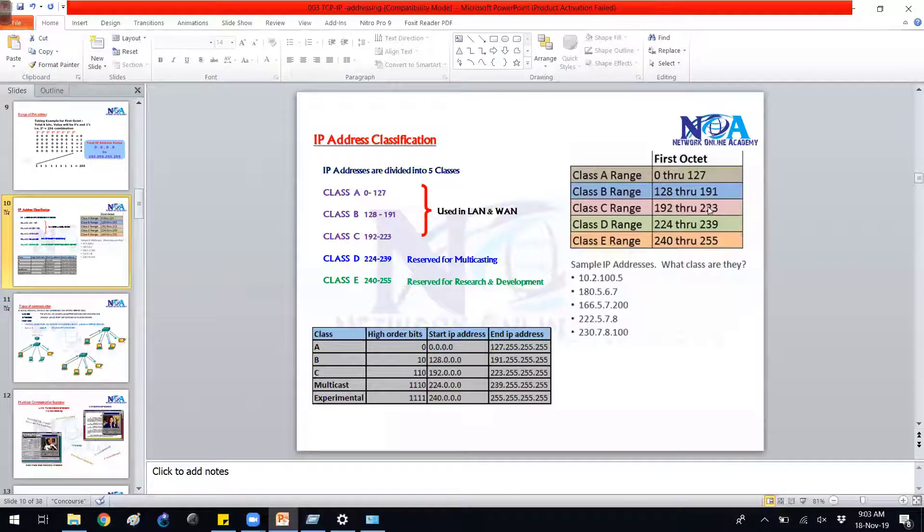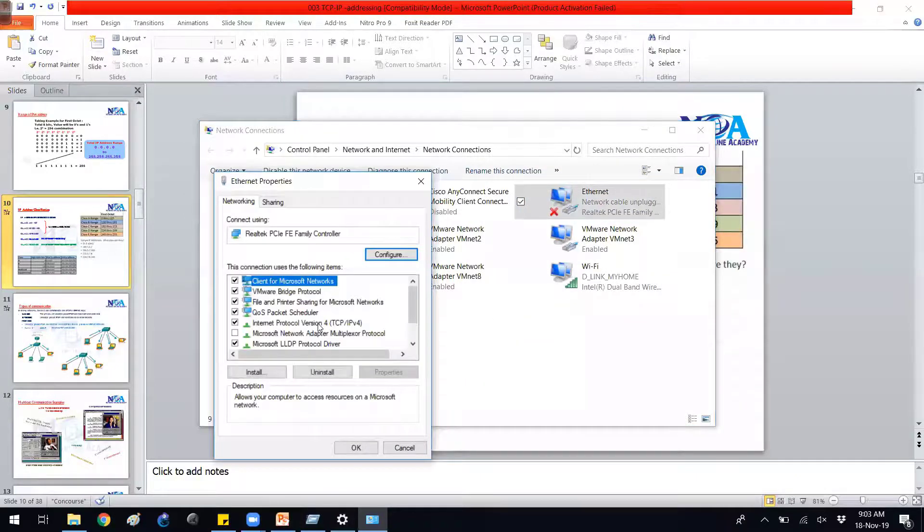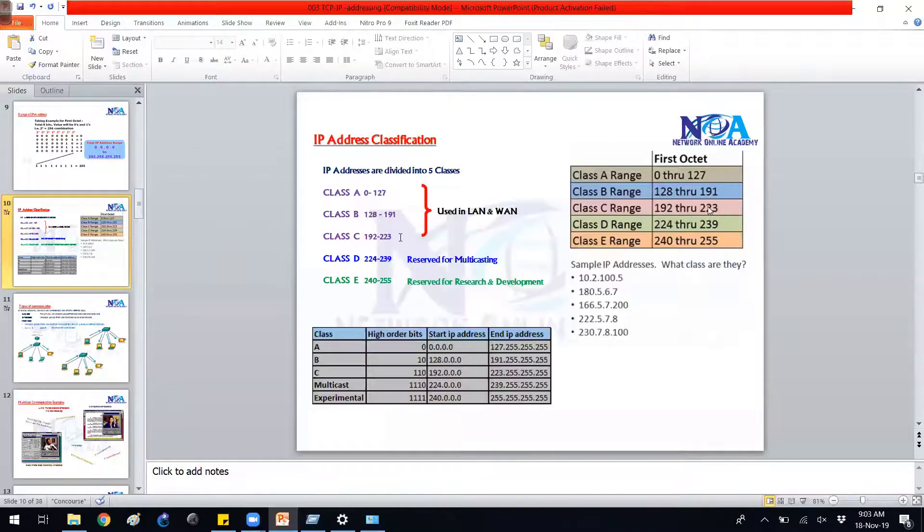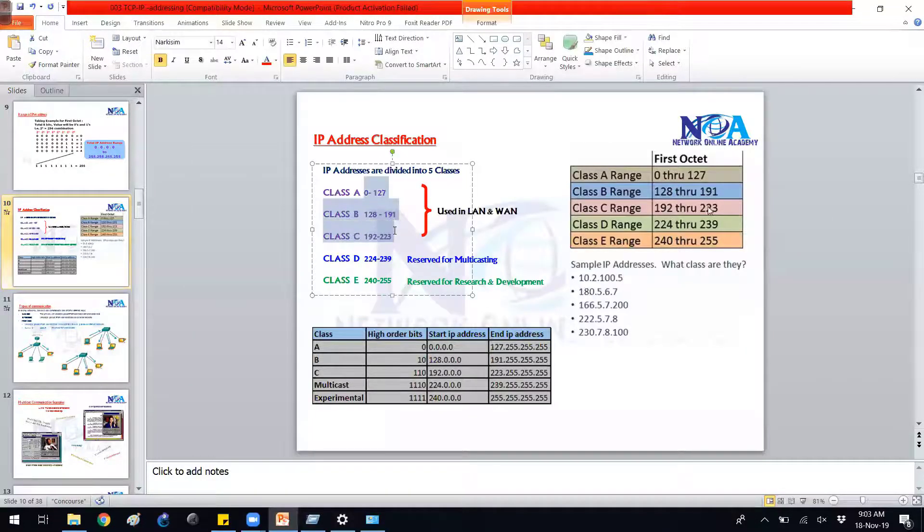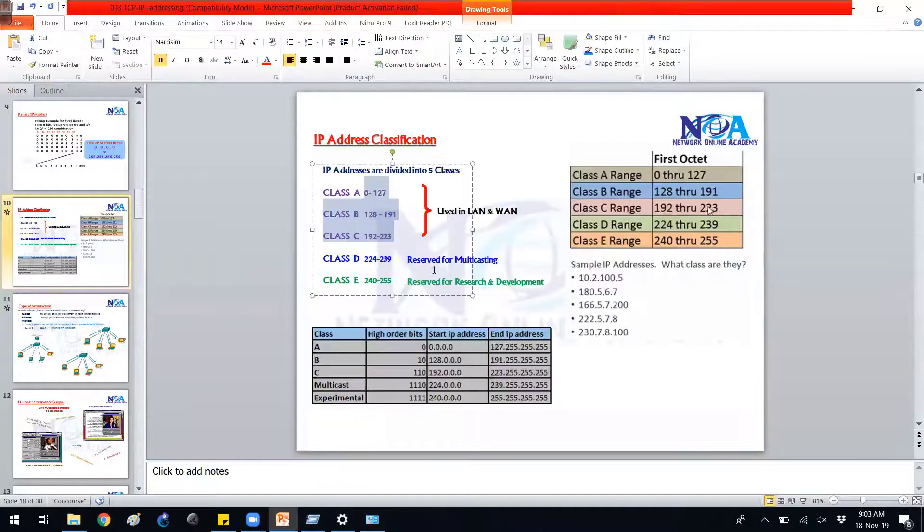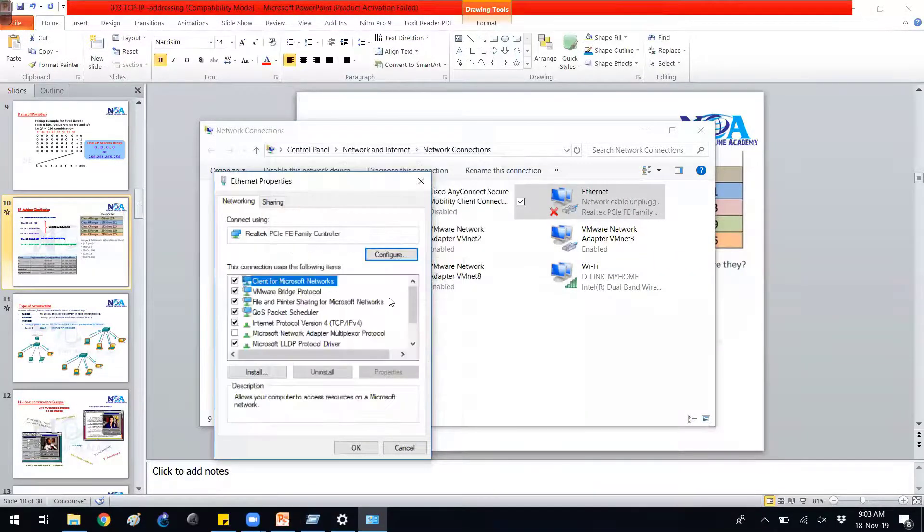If I go to my local area connection properties and try to assign the IP address in the range of class ABC, I can assign. Let's say I'm giving 192.168.1.10. So 192 comes in the class range of C. The device will accept.